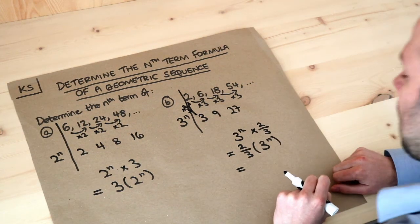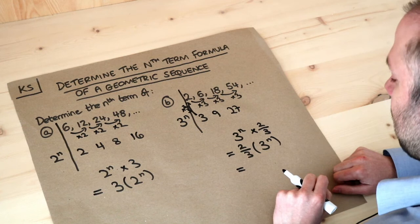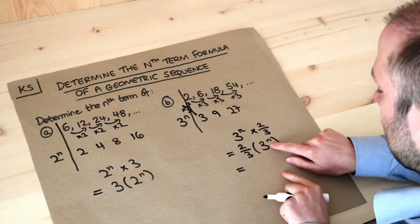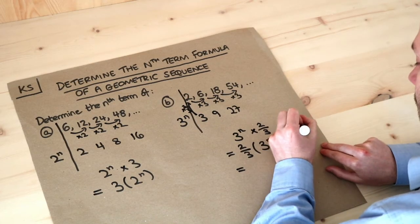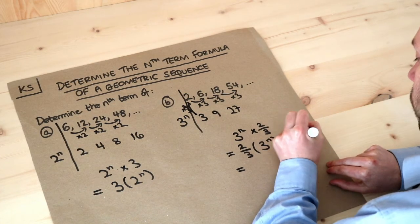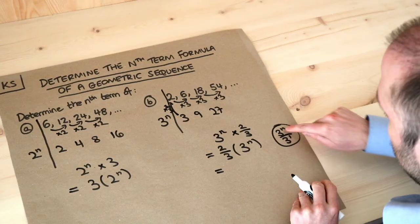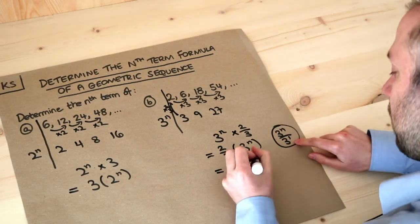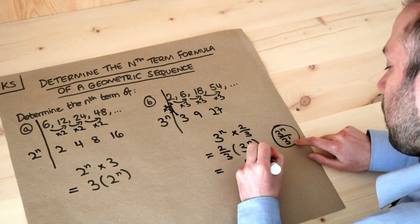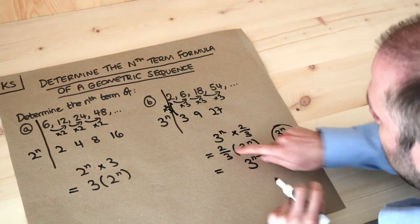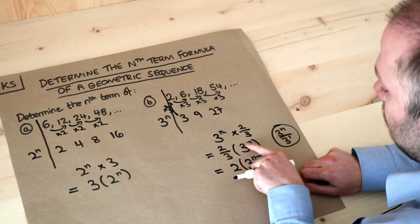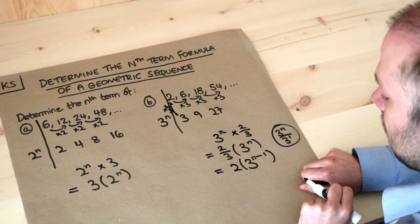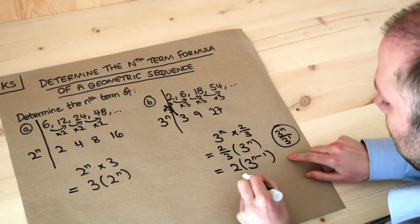If you really want to be super clever, you might use laws of indices. We could write this as 3 to the n divided by 3 to the 1. If you have 3 to the n divided by 3 to the 1, by laws of indices you subtract these indices, so it's 3 to the power of n minus 1. We're still timesing it by 2, so it's 2 times 3 to the n minus 1. Because when you times by 2 thirds, you divide by 3 and then you times by 2. That is the best possible answer.